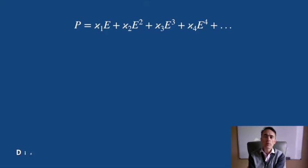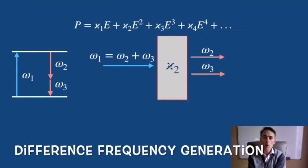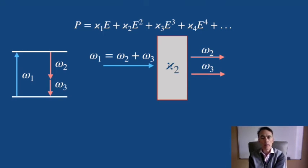There is also the inverse process, where an omega one photon, which is the sum of omega two plus omega three, is incident in a non-linear medium, producing a photon omega two and a photon omega three.